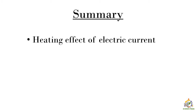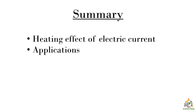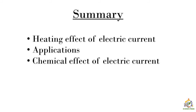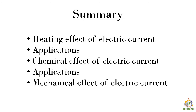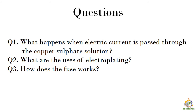Let's summarize what we have learned in this video. First, we saw an experiment on the heating effect of electric current and its applications: electric bulb, iron, geyser, and fuse. Then we saw the chemical effect through a demonstration of electroplating — plating copper on a brass key — and its applications: electroplating, metal extraction, and metal refining. Finally, we saw the mechanical effect of electric current. There are some questions you can pause the video, note them down, and write your answers.